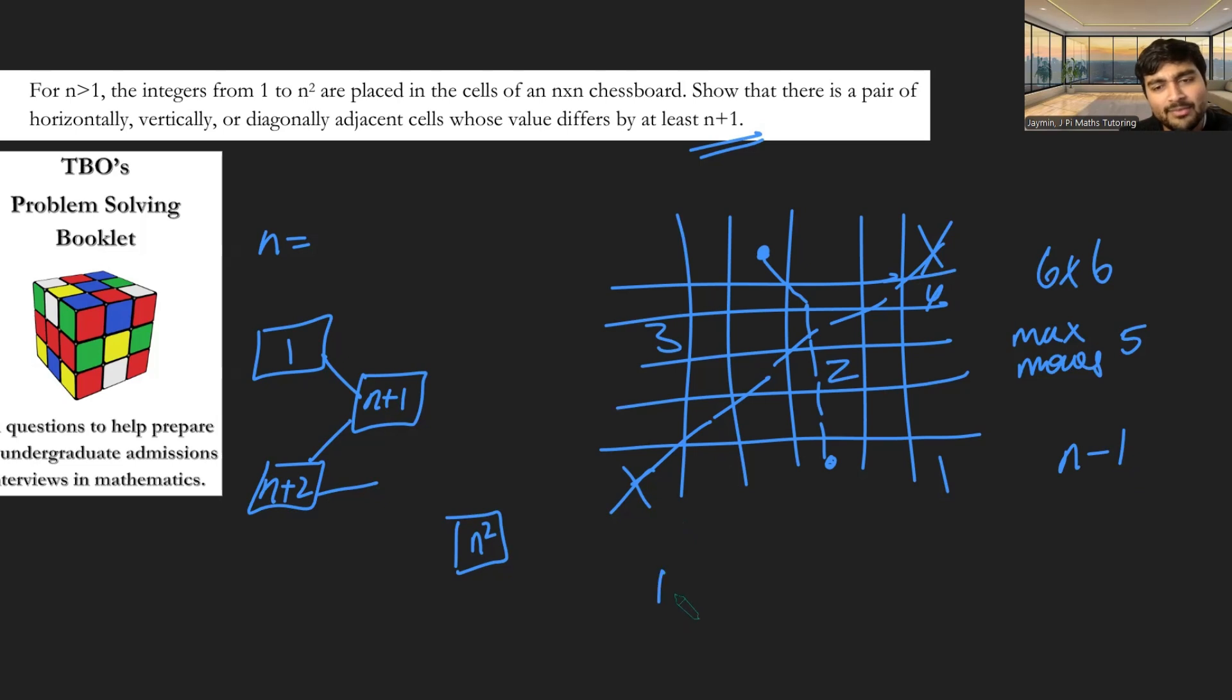But that's not possible, because if I do 1 plus each move thereafter will be at most n. And then if I do at most n minus 1 of them, that gives me n squared minus n plus 1. But since n is bigger than 1, I know that this is going to be strictly less than n squared.